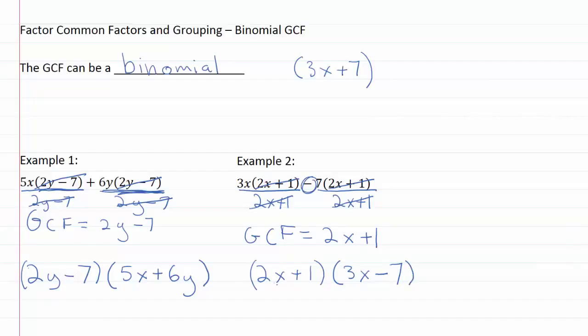So our factored form comes out to 2x plus 1 times 3x minus 7.